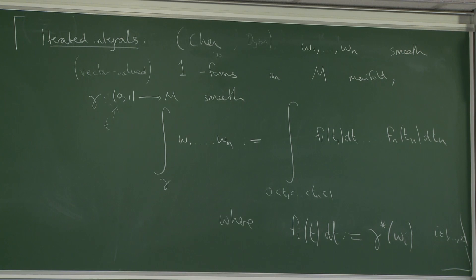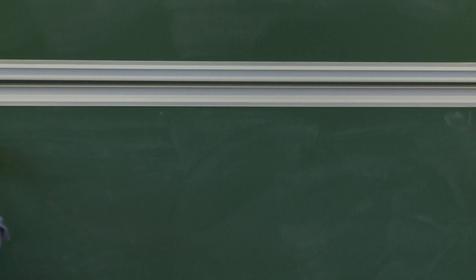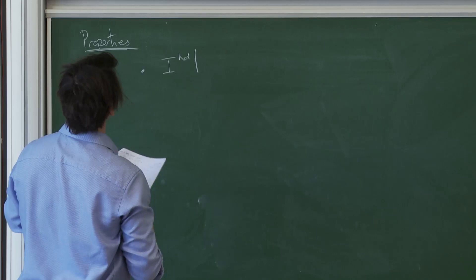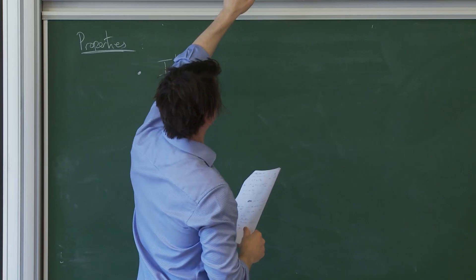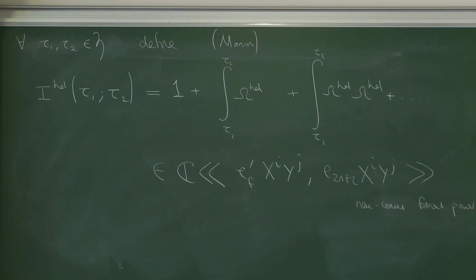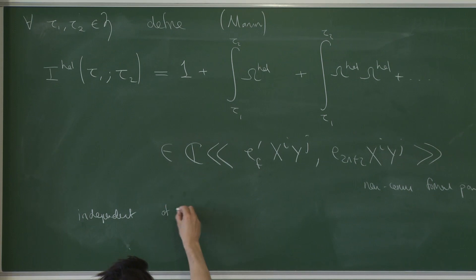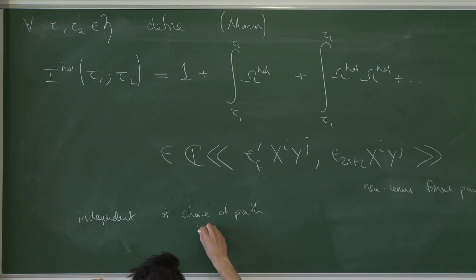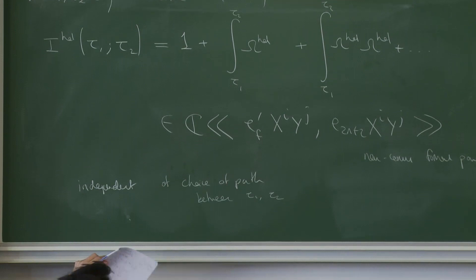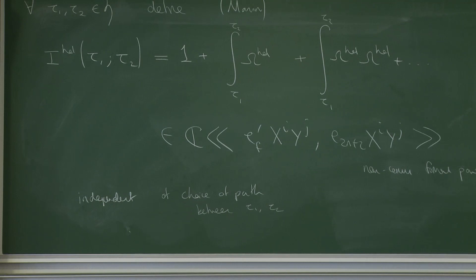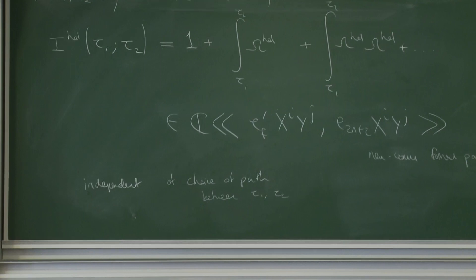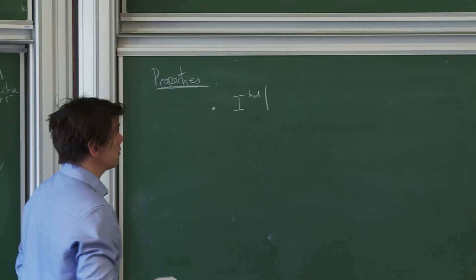In this case, because the form omega is closed, this iterated integral does not depend on the choice of path. Since the upper half plane is simply connected, it's independent of the choice of smooth path between tau_1 and tau_2; it's really a function of the endpoints. That's because this differential form is integrable — it's closed, and its wedge product with itself vanishes, which is clear because we're on a one-dimensional complex space.